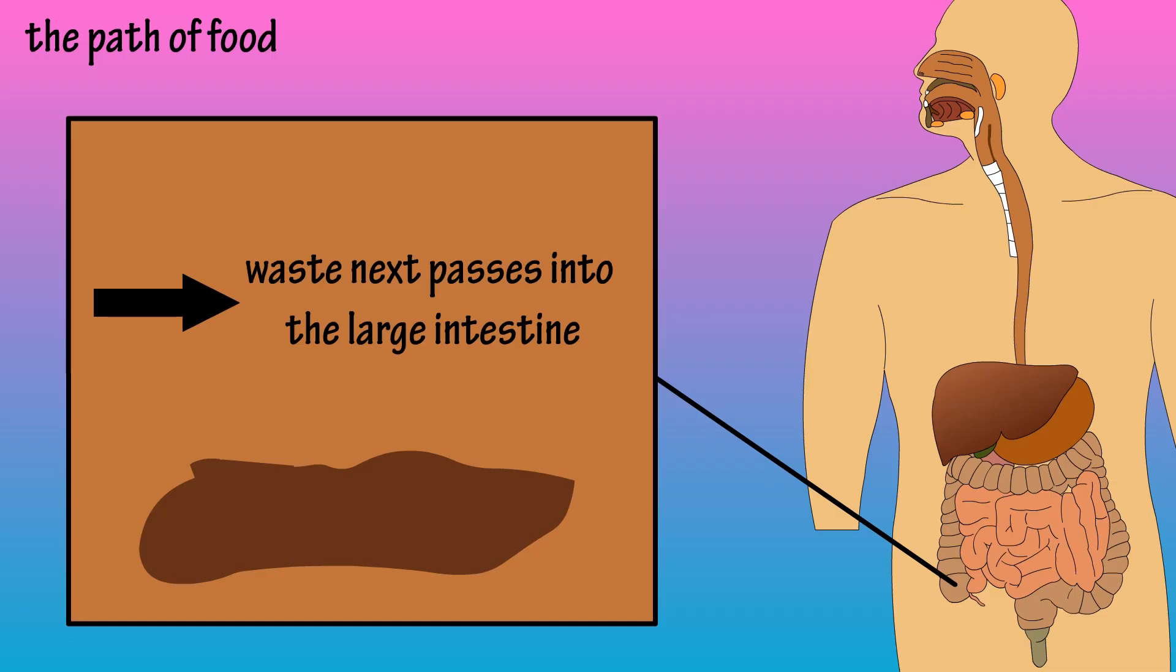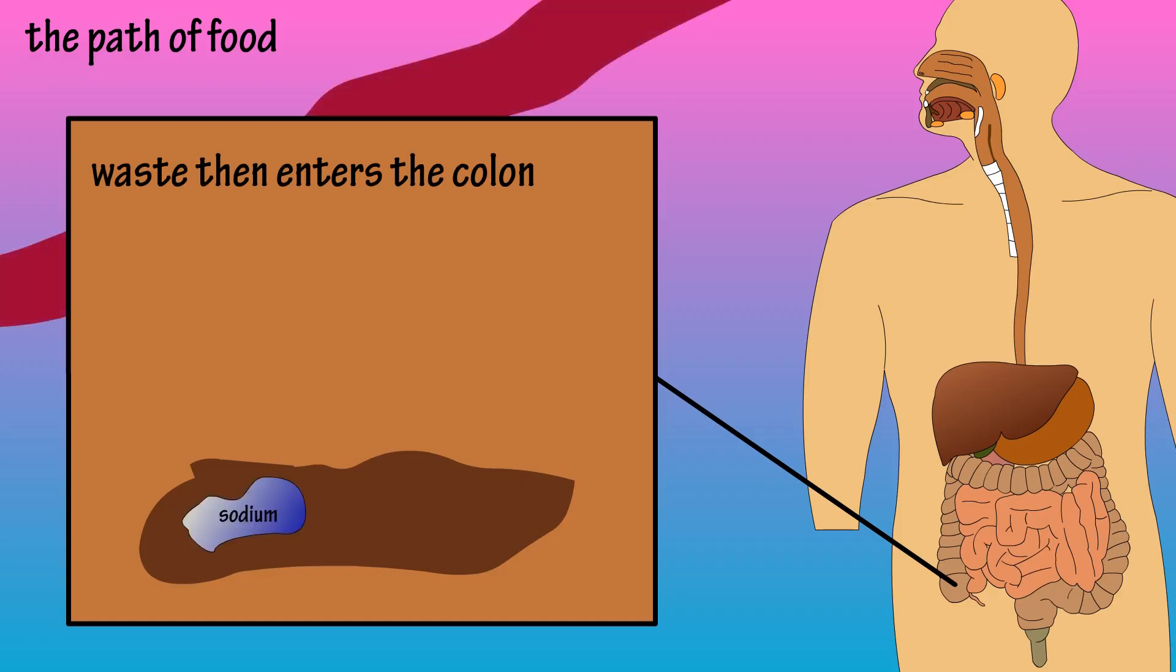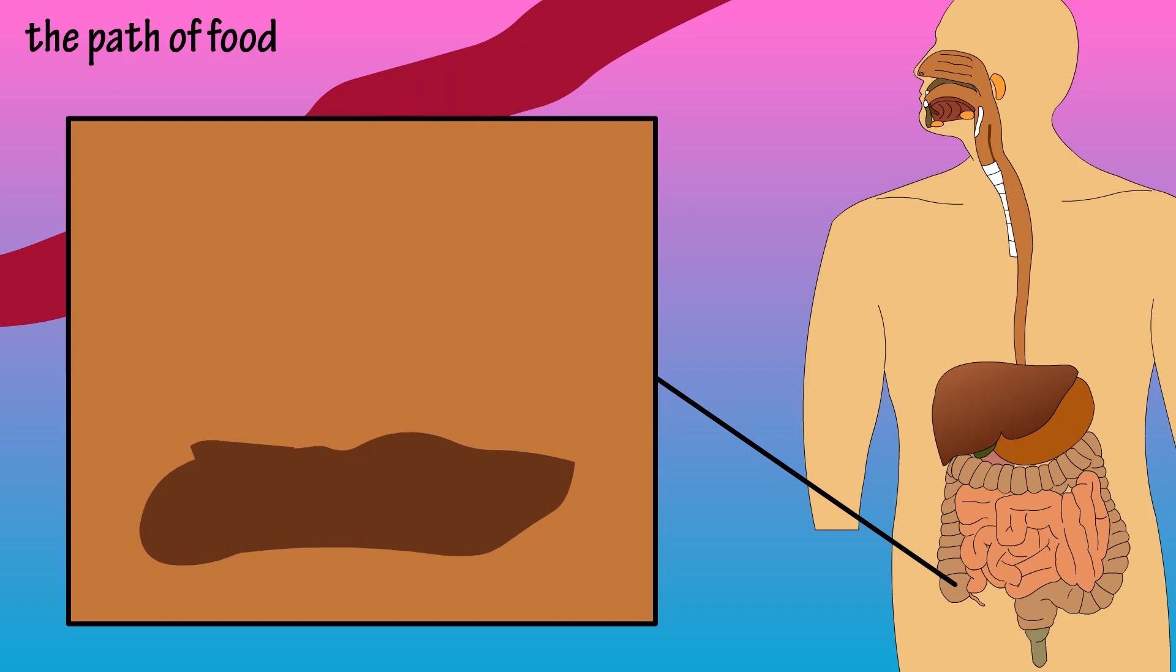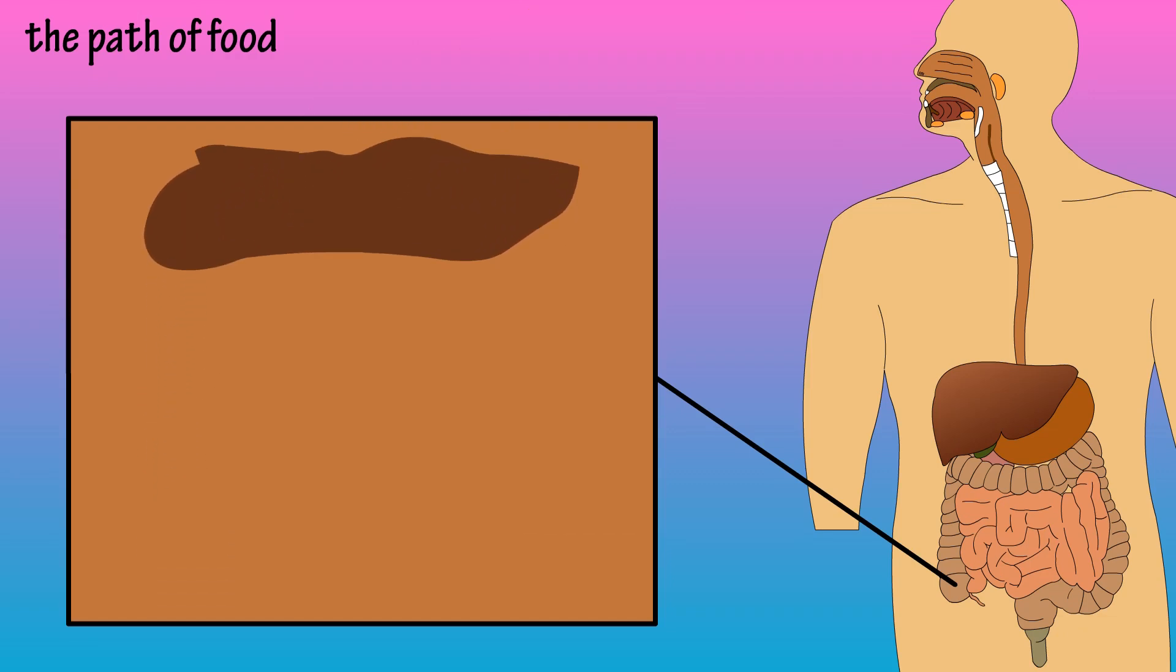From there, it enters the second part of the large intestine, called the colon. Here, sodium, chloride, and water are absorbed through the lining of the colon into the bloodstream, helping convert the liquid food, or chyme, into semi-solid feces.